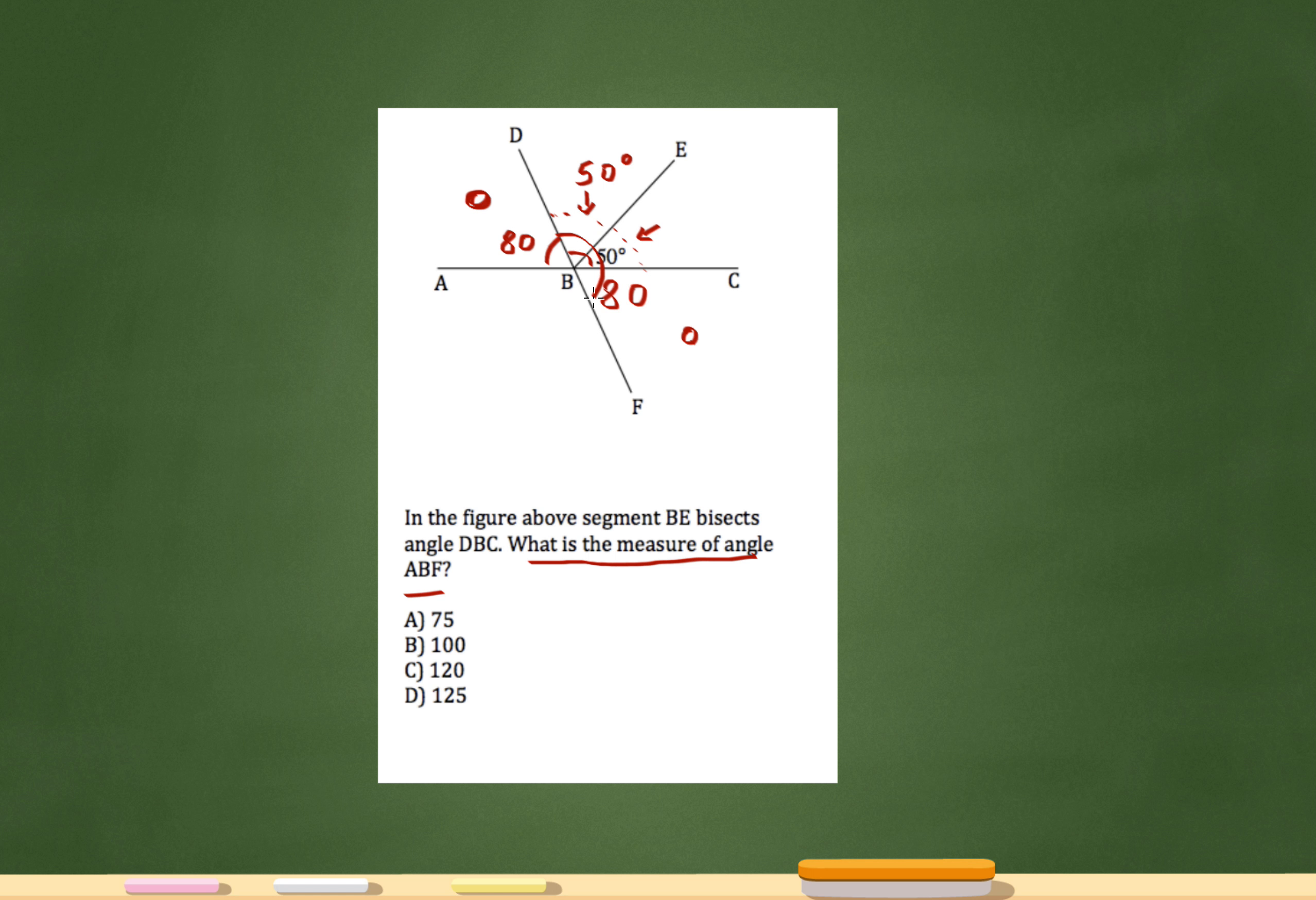See how there's a straight line right here too? Line DBF. And all these angles must be 180. So this is 50, this is 50, this must be 80.